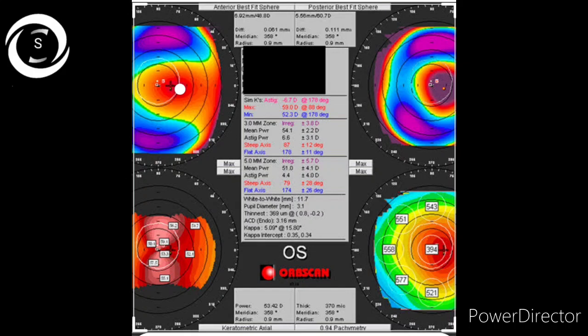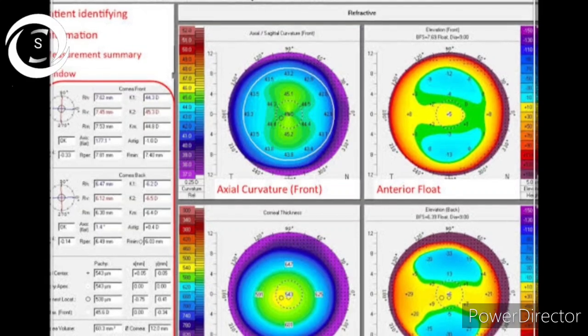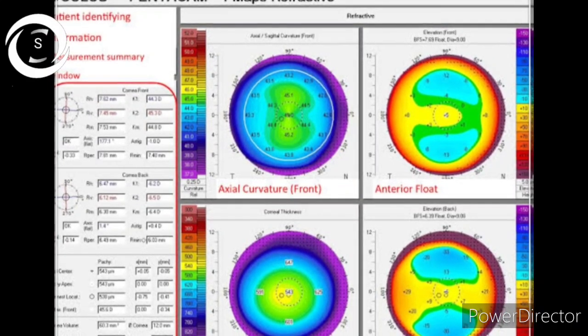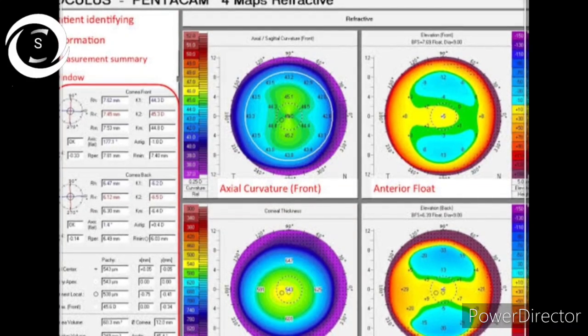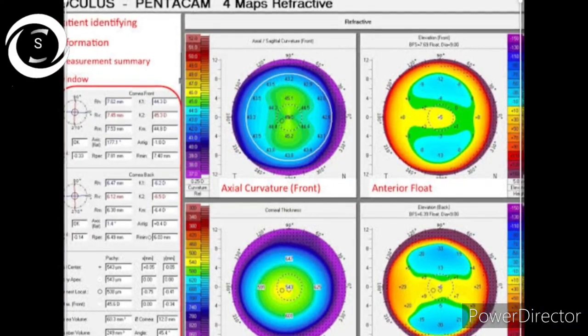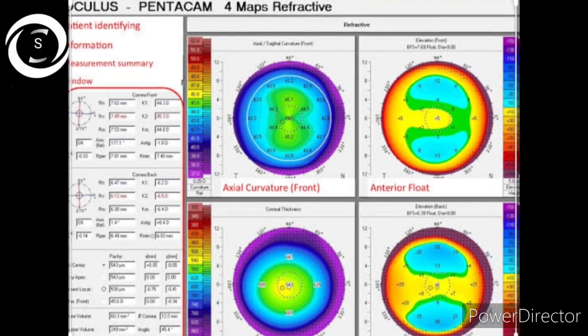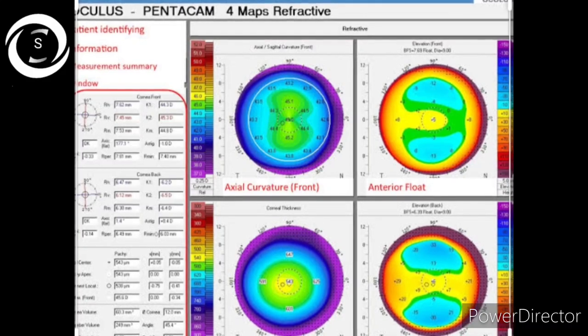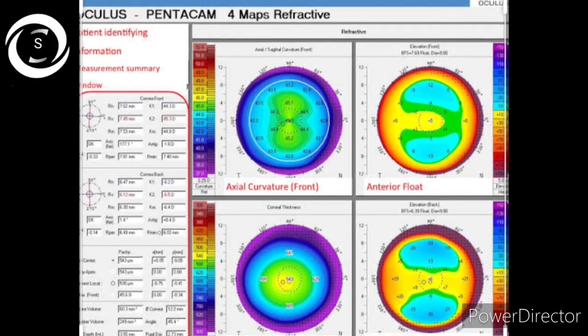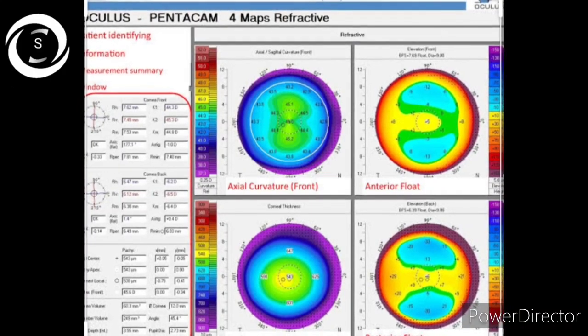Now look at the diagram. This is colored printout of orb scan and the values are in the center. In the orb scan anterior and posterior elevation maps are superior whereas axial and thickness maps are shown inferior. Whereas if you compare it with penta cam, values are on the left side, axial map top left, anterior elevation map top right, posterior elevation bottom right, and pachymetry bottom left. So with these differences you can identify clearly. And then the appearance as well, in penta cam full cornea is shown whereas in orb scan not full cornea, periphery is not that much shown.